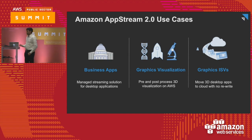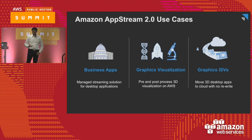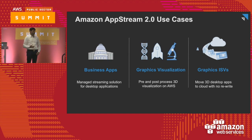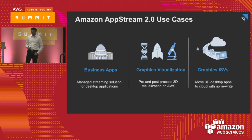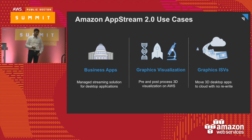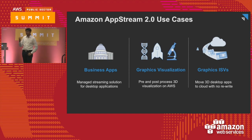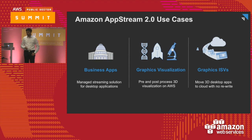Then there's graphics virtualization, where customers today run virtualized workstations on-premises. They take 3D engineering applications and put them in the data center to escape the limits of existing hardware — whether it's commodity hardware or they don't want to invest in expensive workstation purchases. So you can virtualize those workstations, put the 3D applications on AWS, and deliver them through AppStream just on a browser.